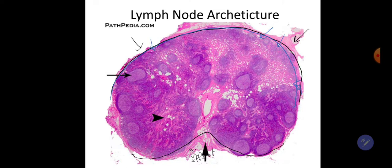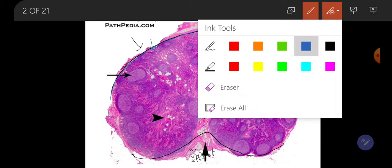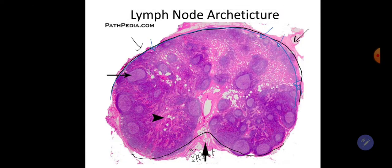The cortex, which is always the darker portion, consists of a primary follicle — a homogenous nodule of small, darkly staining, naive, inactivated B lymphocytes — and a secondary follicle, which due to antigenic stimulation shows features such as germinal center formation, polarization, and tingible body macrophages.